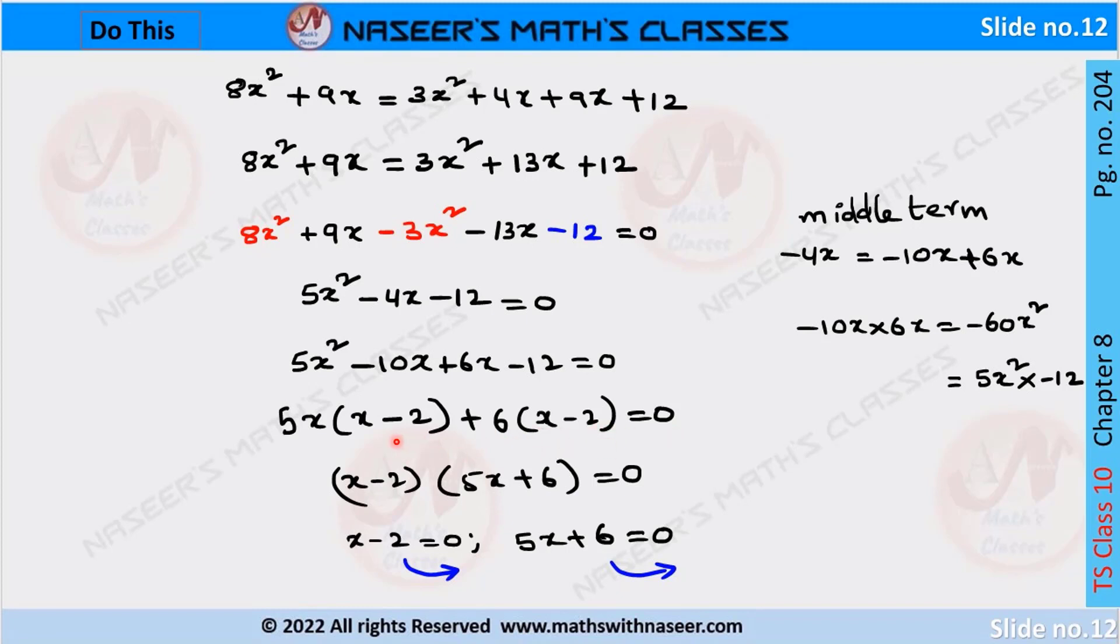In this equation, we have X minus 2 common. So we take out X minus 2 common. Then it can be written as X minus 2 into 5X plus 6 equals 0. We now separately write these equations as X minus 2 equals 0 and 5X plus 6 equals 0.